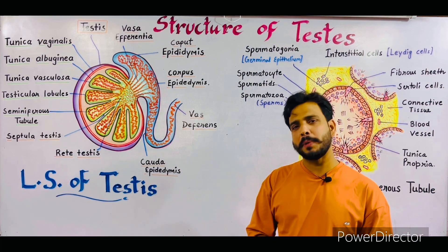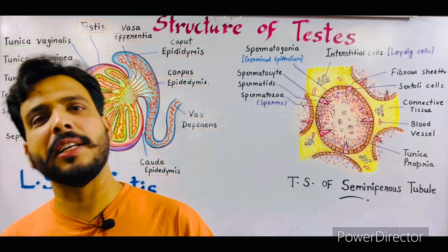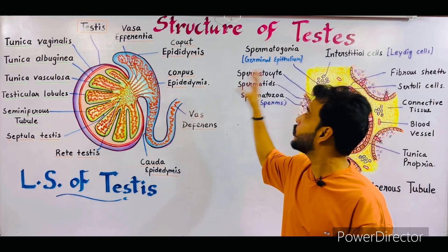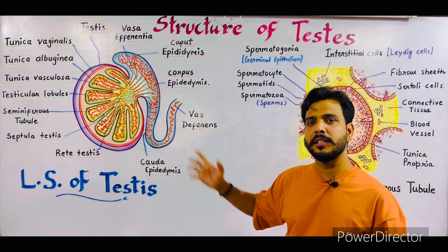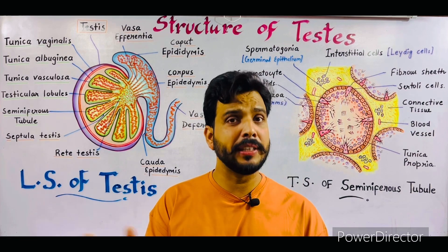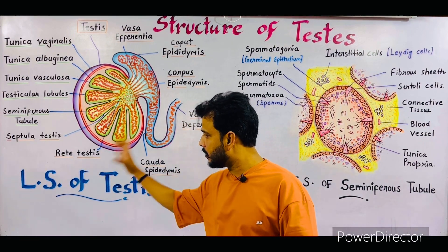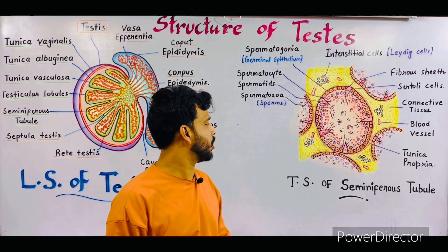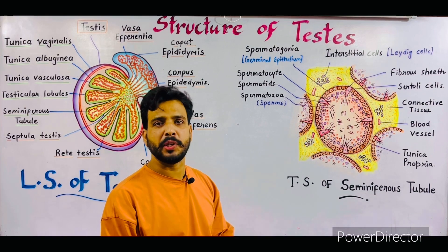This video is especially related to my class 12 students, also for my NEET students and for my BSc students. In this lecture we will talk about the structure of testis — the detailed structure, the morphology, the anatomy, the histology, different kinds of cells and the functions of testis. We will describe in detail the LS of testis and also the detailed structure of a seminiferous tubule in which sperm formation takes place.